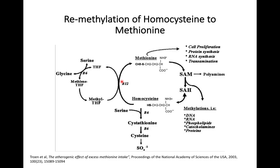People with gut issues don't absorb B12 very well. If you're not eating animal protein, you really need to supplement with B12 because you will likely be deficient. For homocysteine to be remethylated to methionine, and methionine to make SAM, SAM is the body's major methyl donor and provides the methyl group for enzymes such as the COMT enzyme in the liver, which is part of phase two liver detoxification of estrogen.